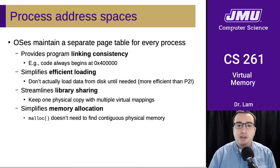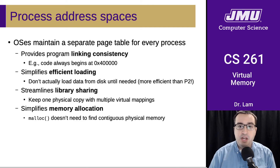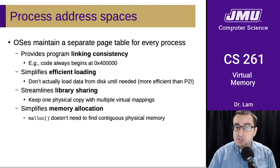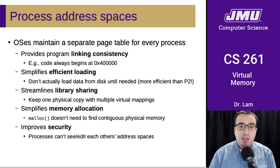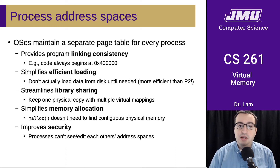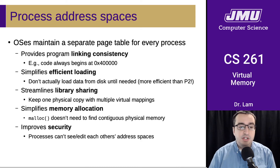Virtual memory also simplifies memory allocation because malloc doesn't have to find large contiguous chunks of physical memory. It can allocate contiguous addresses in the virtual memory space, and those various portions can map to different places in physical memory. This also improves security because processes can't see or edit each other's address spaces, as long as they are private regions.